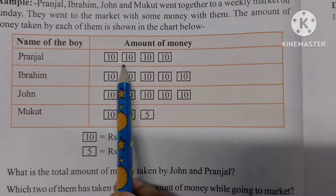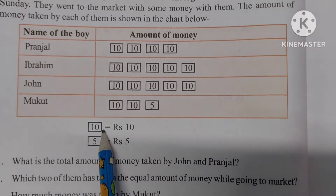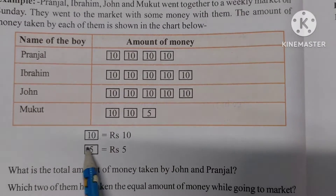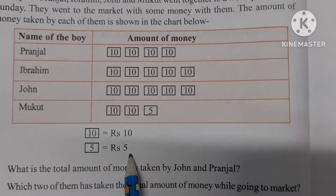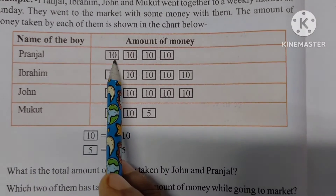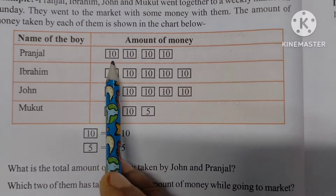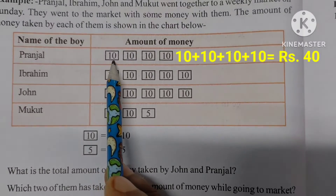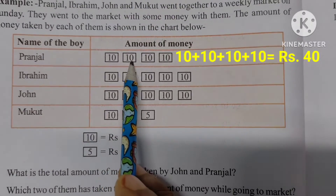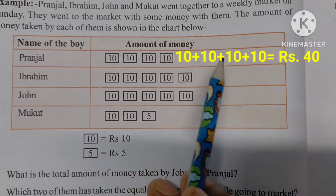Pranjal has pictures of 10 rupees symbols. That means 10 plus 10, 20, 30, 40. Pranjal has taken rupees 40.